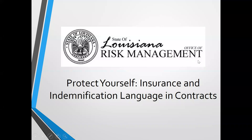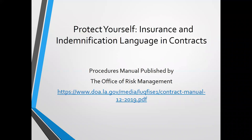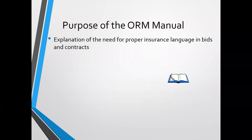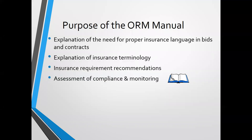We publish a contract manual on our website. It is a long web address, so if you can't find it, feel free to reach out to me and I can send you the link after this presentation. The purpose of our manual is an explanation of the need for proper insurance. It's really designed to be a tool for our agencies going into contracts — not just from a contract drafting standpoint, but also for contracts they're entering into with third parties outside of procurement.